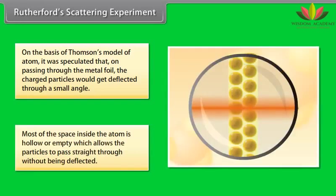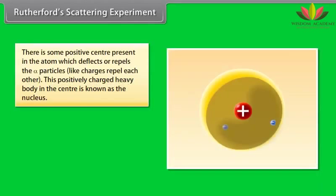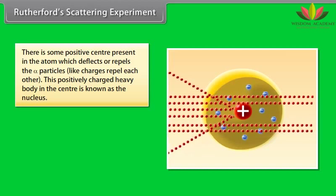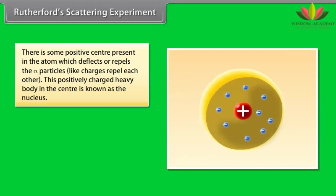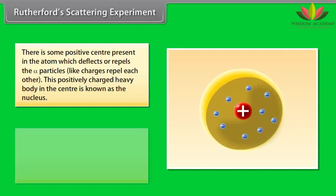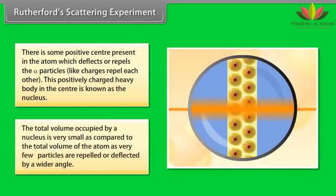Most of the space inside the atom is hollow or empty, which allows the particles to pass straight through without being deflected. There is some positive center present in the atom, which deflects or repels the particles, like charges repel each other. This positively charged heavy body in the center is known as the nucleus. The total volume occupied by a nucleus is very small as compared to the total volume of the atom, as very few particles are repelled or deflected by a wider angle.